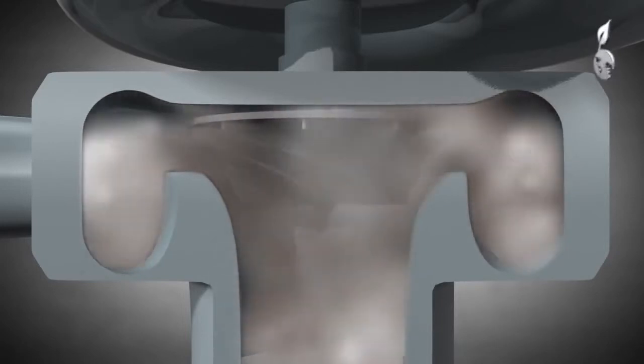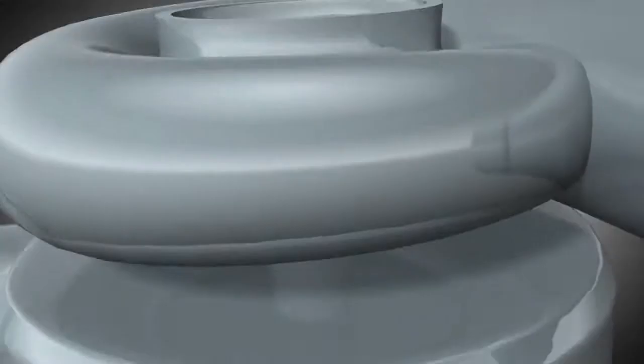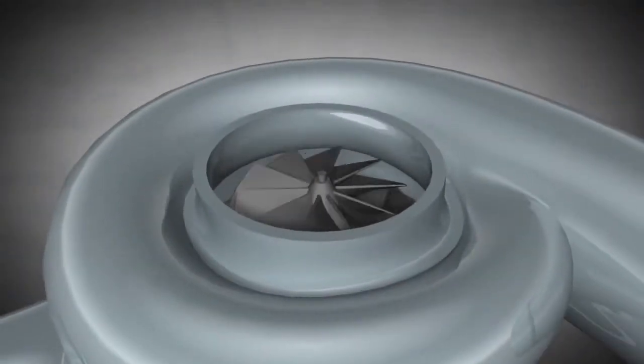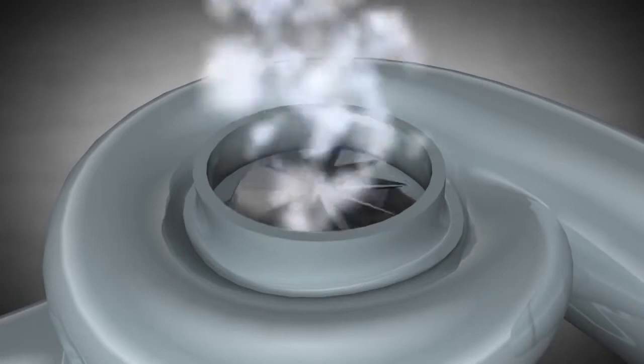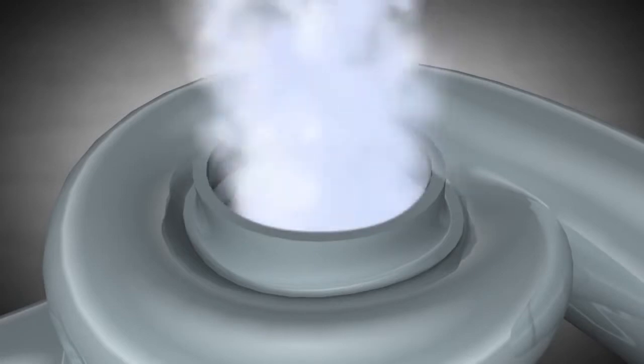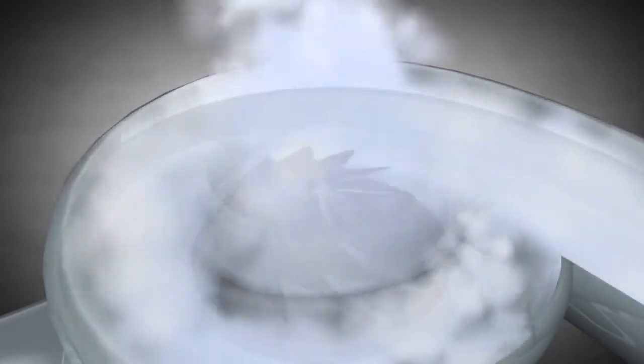As the turbine wheel and compressor wheel share the same shaft, the compressor wheel spins at the same speed as the turbine wheel. Consequently, the compressor wheel draws in air and compresses it. Then, the air passes through the outlet port and supplies the engine with oxygen.